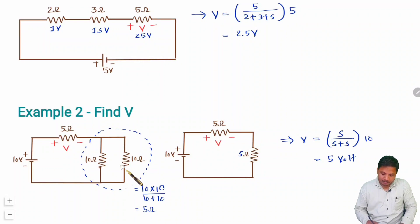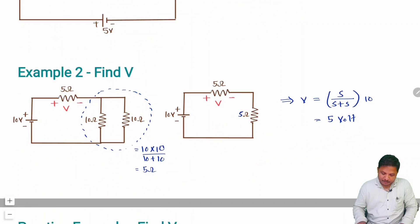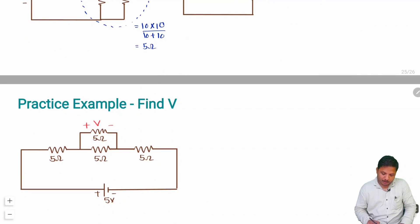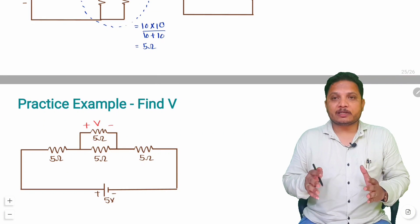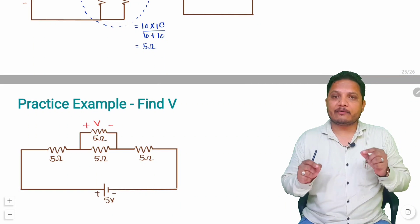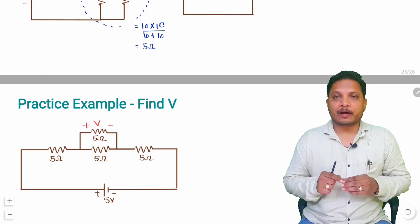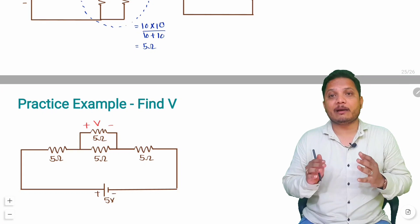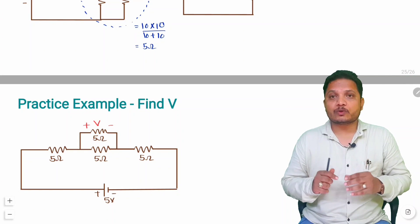Initially, when using the voltage divider formula, you cannot solve it by considering the two parallel resistors directly — you must combine them first. For the homework question: we have a 5V supply and you need to find voltage V across the 5Ω resistor. Use the explanation given and you will definitely get the answer. If you have any query, post it in the comment box — I will be happy to help. Thank you so much for watching this video.